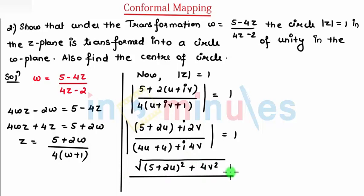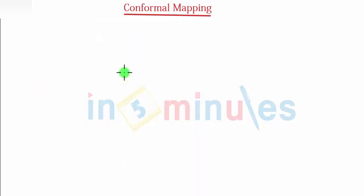This gets divided by under root 16 times u plus 1 the whole square plus 16v square and that is equal to 1.